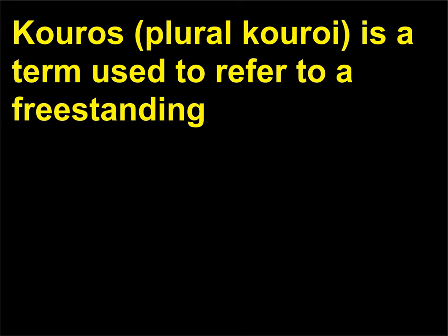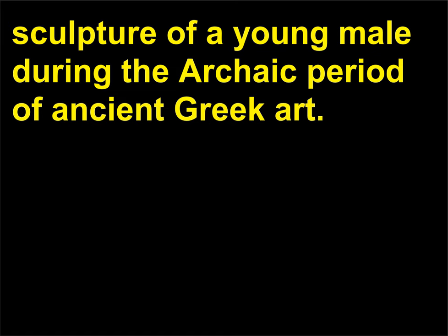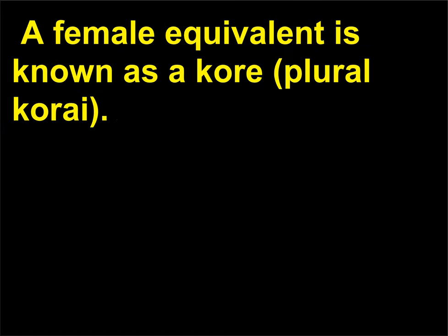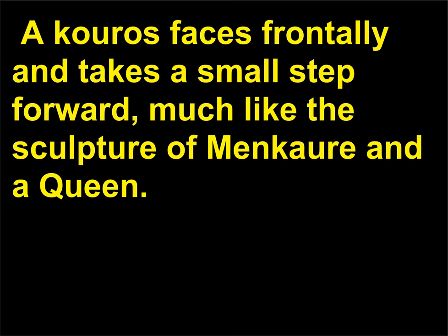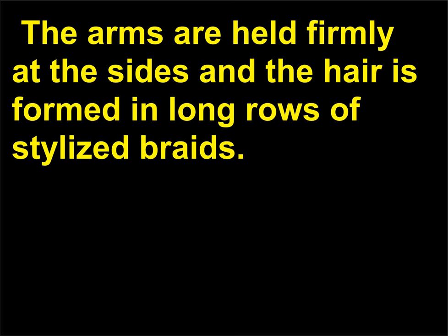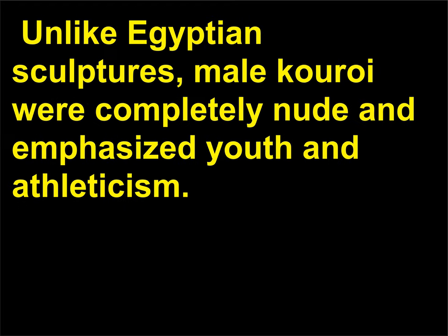What is a Kouros? Kouros, plural Kouroi, is a term used to refer to a freestanding sculpture of a young male during the archaic period of ancient Greek art. A female equivalent is known as a Kore, plural Korai. These statues were usually life-size and influenced by Egyptian sculpture. A Kouros faces frontally and takes a small step forward, much like the sculpture of Menkaure and a Queen. The arms are held firmly at the sides and the hair is formed in long rows of stylized braids. Unlike Egyptian sculptures, male Kouroi were completely nude and emphasized youth and athleticism.